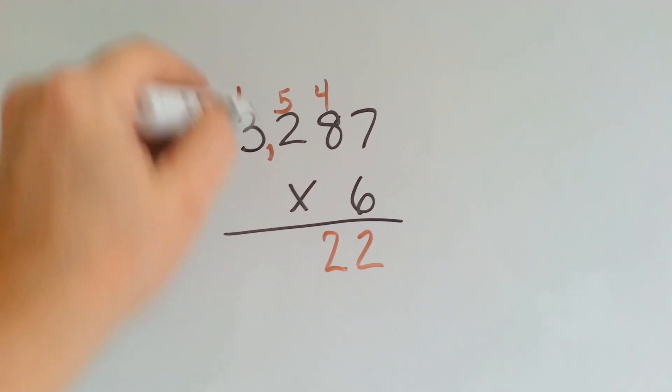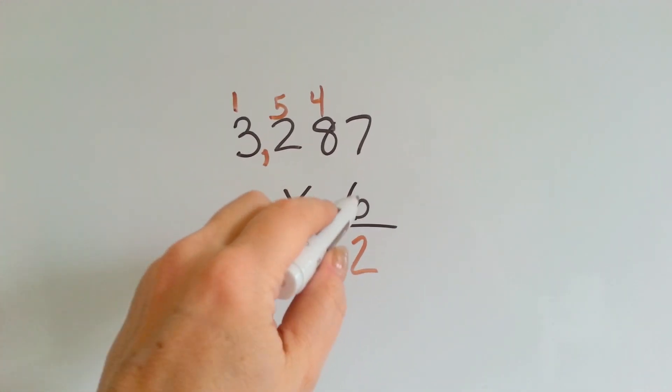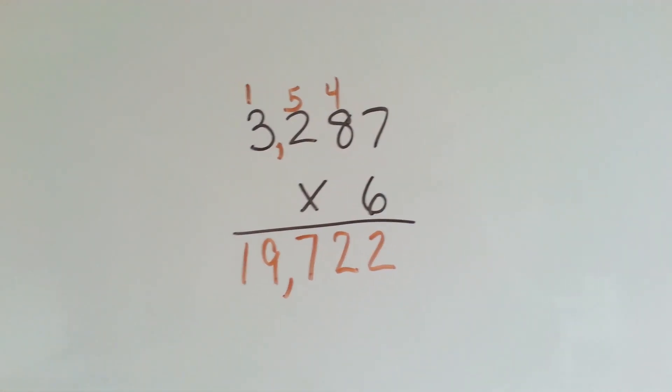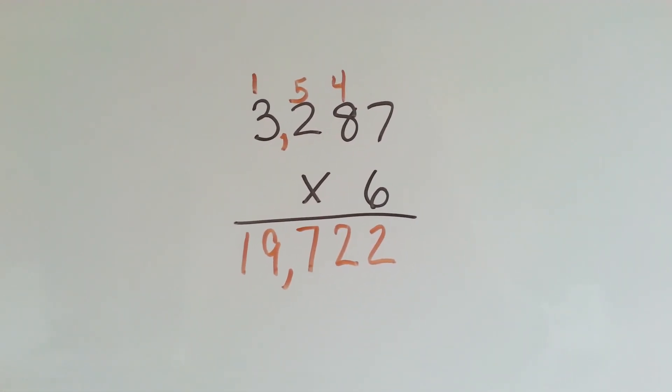6 times 3 is 18, plus the 1 is 19. So our answer is 19,722.